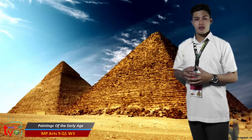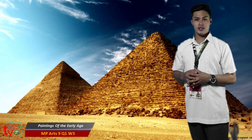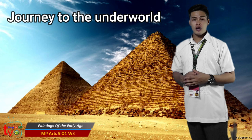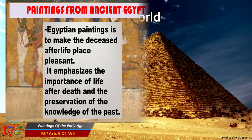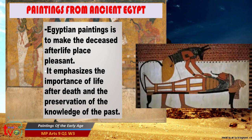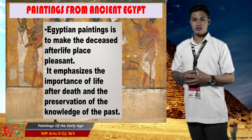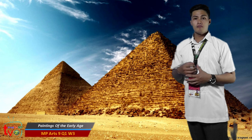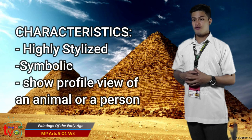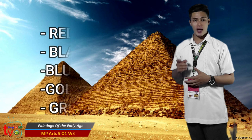Paintings from ancient Egypt — the purpose of Egyptian painting is to make the deceased's afterlife place pleasant. Tales include Journey to the Underworld and Introducing the Deceased to the Gods of the Underworld by their Protective Deities. It emphasizes the importance of life after death and the preservation of the knowledge of the past. Most paintings were highly stylized, symbolic, and show a profile view of an animal or a person. The main colors used were red, black, blue, gold, and green, derived from mineral pigments that can withstand strong sunlight without fading.